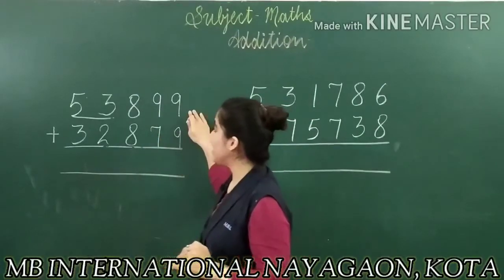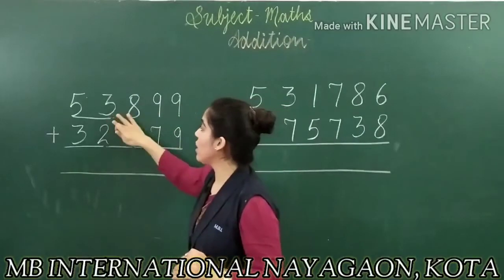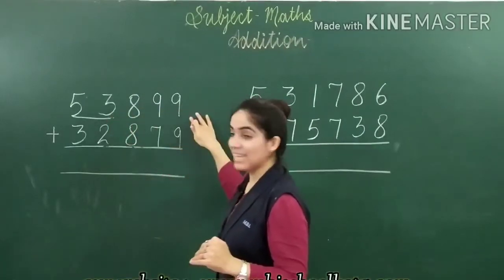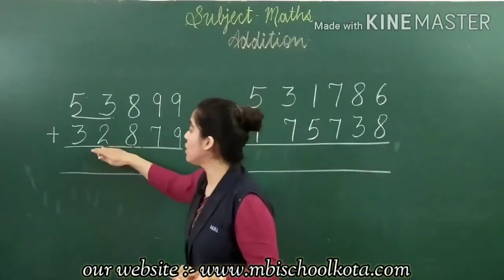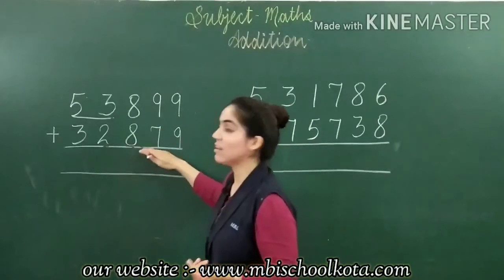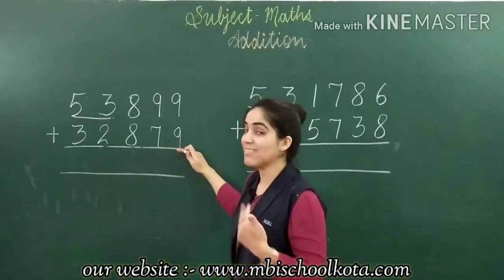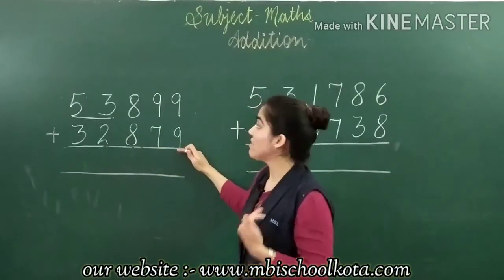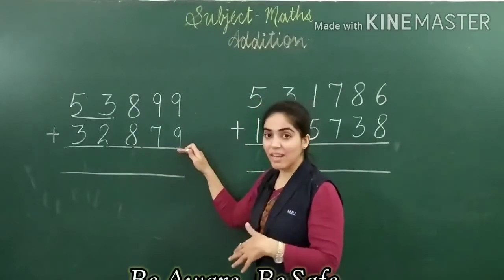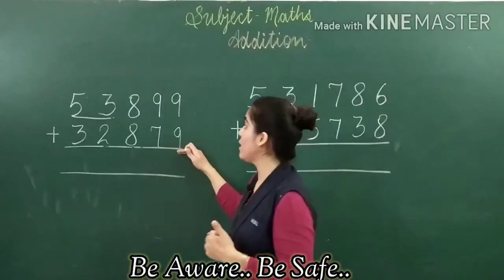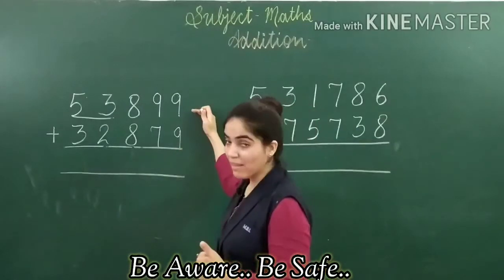So the first addend is fifty-three thousand, eight hundred, ninety-nine, and the second addend is thirty-two thousand, eight hundred, seventy-nine. Let's start. We start from the right side, from the back side, from the ones place.